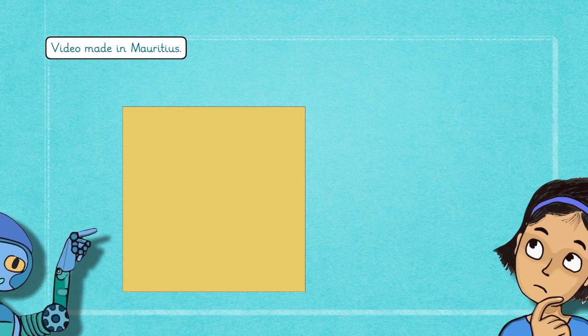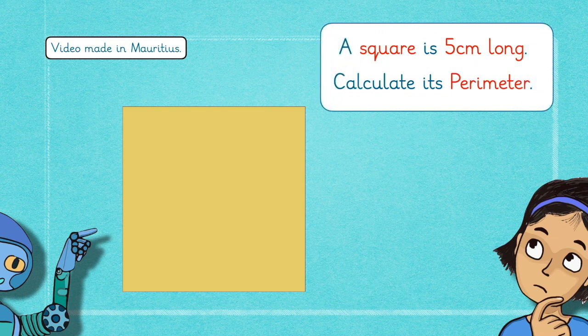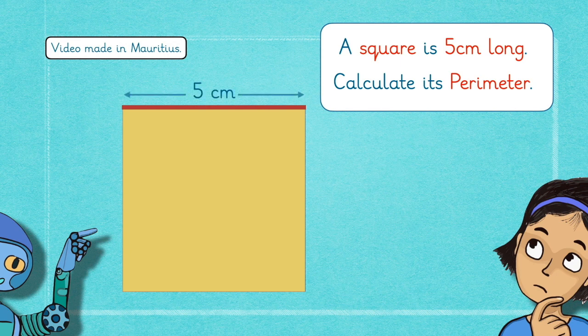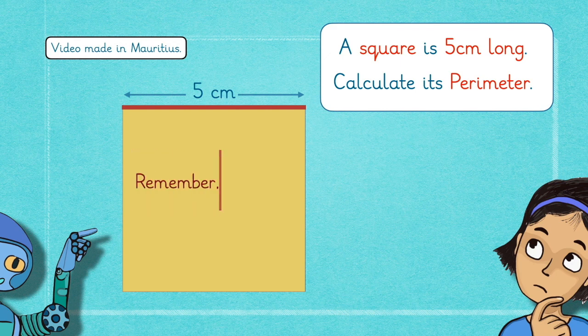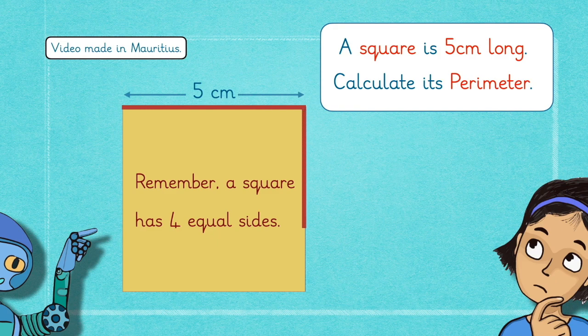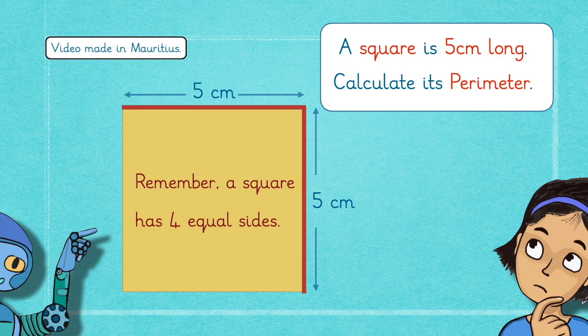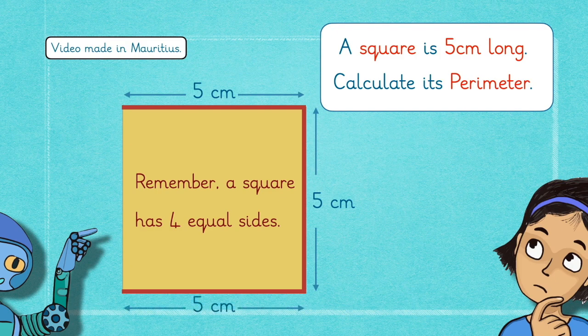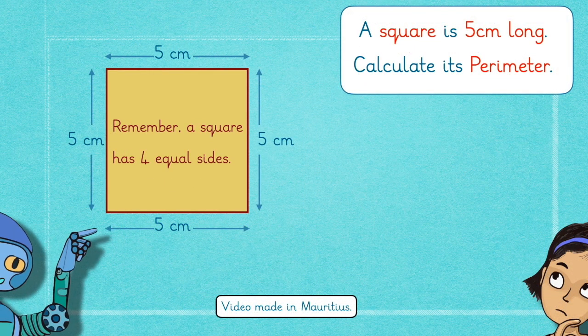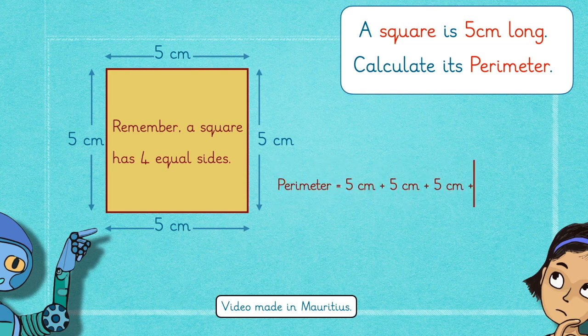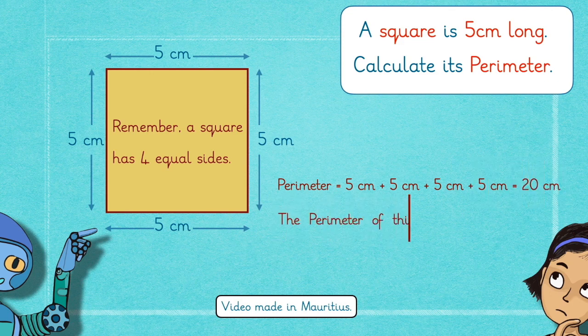Now, let us calculate the perimeter of a square. Suppose a square is 5 cm long. Calculate its perimeter. Remember, a square has 4 equal sides. Yes, Inouane is right. A square has 4 equal sides. So, the perimeter of a square will be 5 cm plus 5 cm plus 5 cm plus 5 cm which is equal to 20 cm.